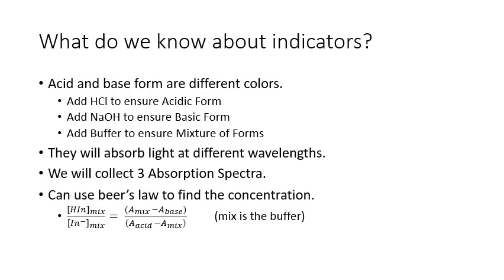What we know about indicators is that the acidic and basic form are different colors and for this lab we're adding hydrochloric acid to ensure that the indicator is completely in the acidic form. We're adding sodium hydroxide to make sure that it is completely in the basic form of the indicator and then there's a buffer that's going to be added to make sure that we have a mixture of both the acidic and the basic form. Because they are different colors that means they'll absorb light at different wavelengths depending on if it's in the acidic form or the basic form.